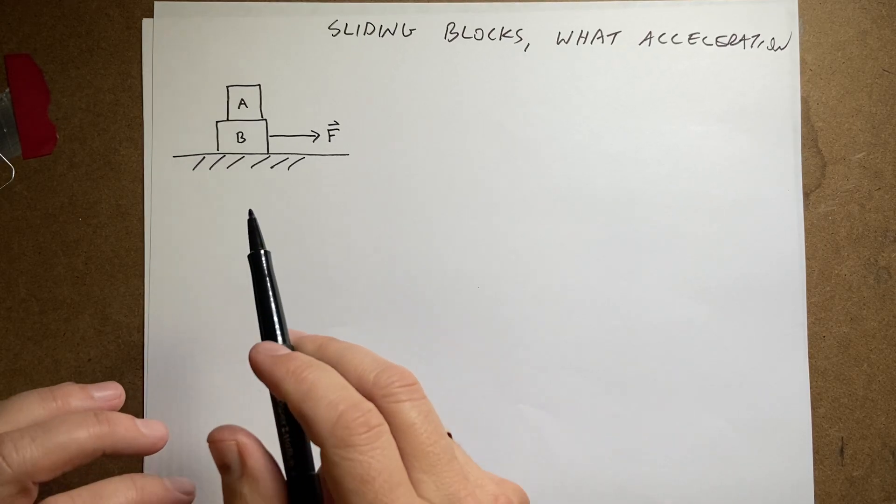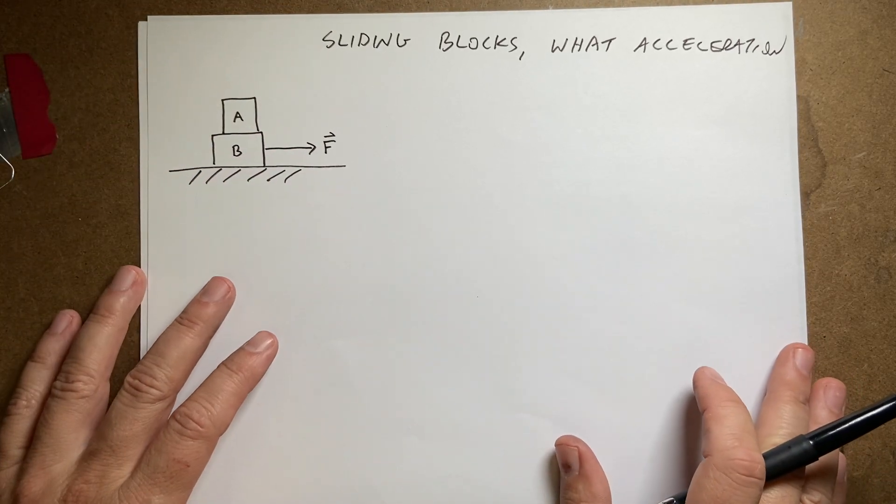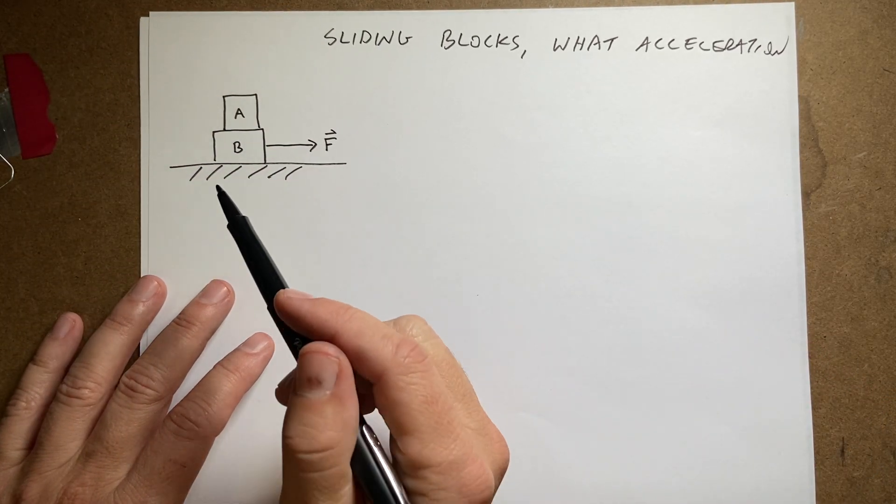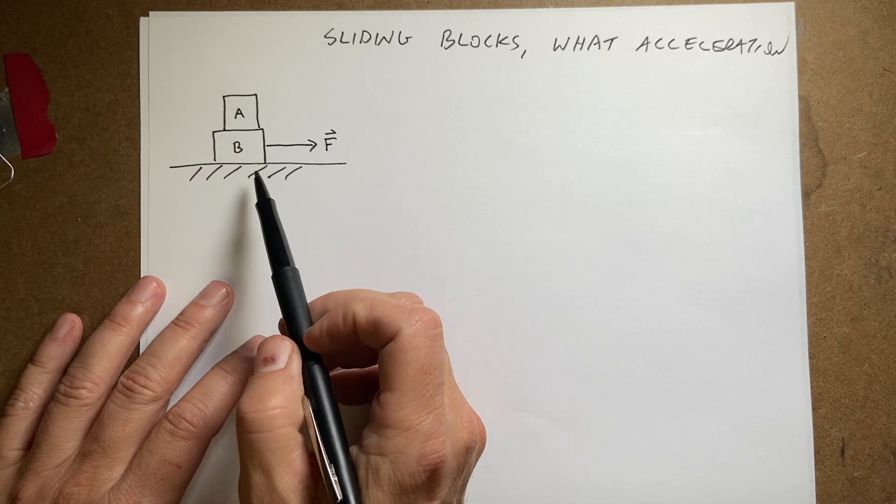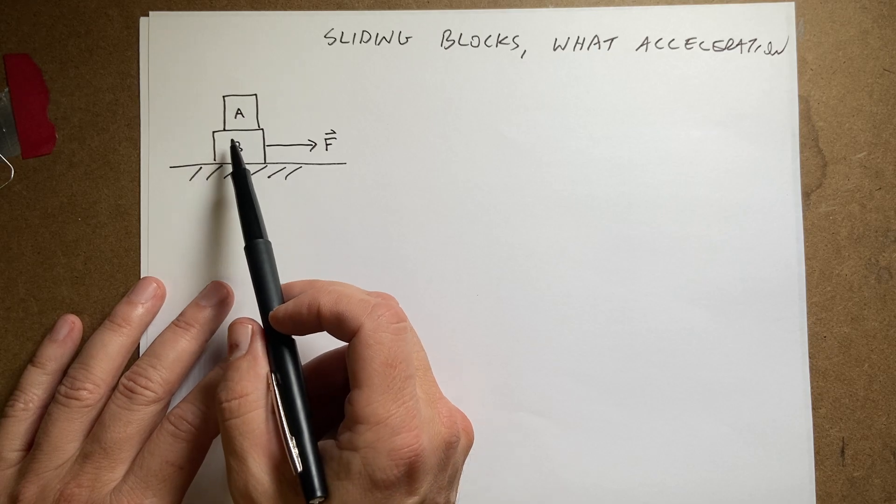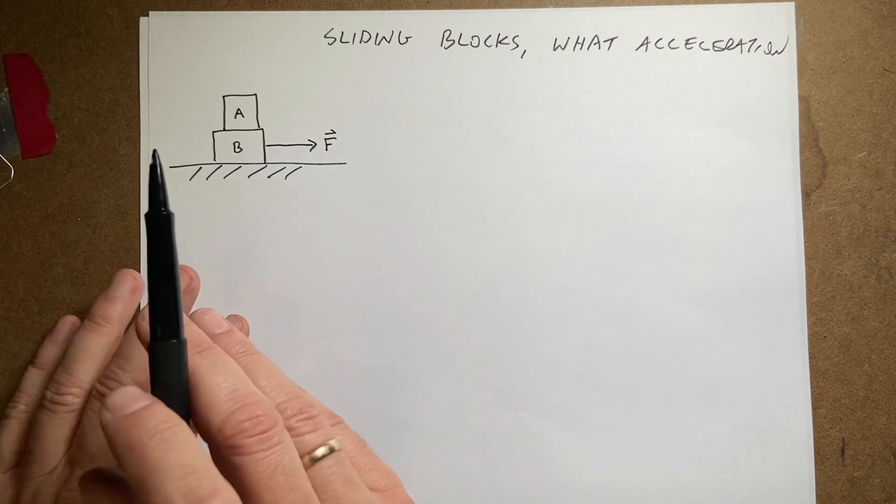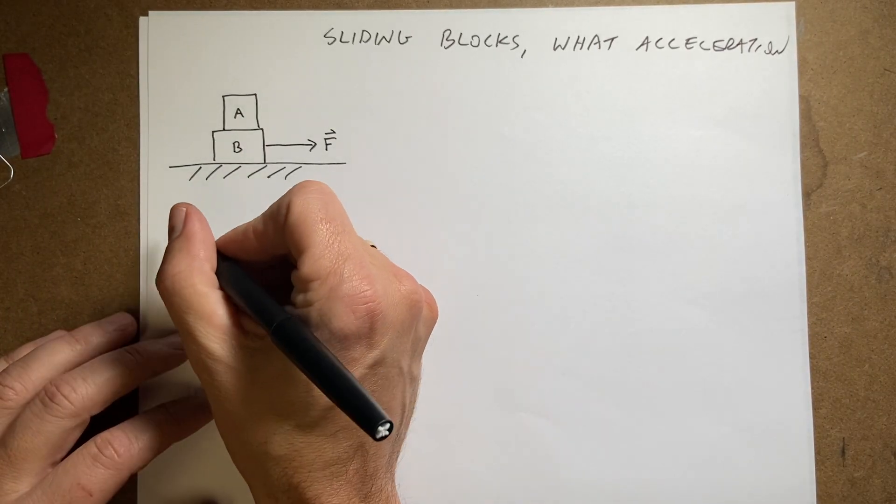Okay, let's do some physics problems. So here's the situation. There's a lot of problems that are just like this, but let's just get to it. So I have a block, and it's on a table. And then there's a block on the block. But I pull on the bottom block, and the question is what's the acceleration of these two? So we need some values.